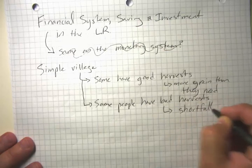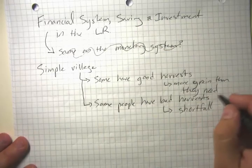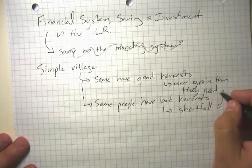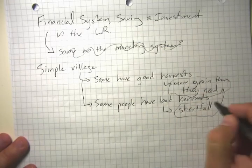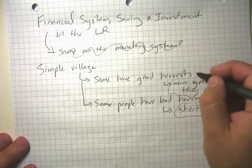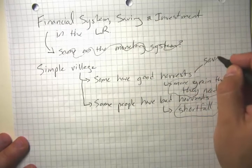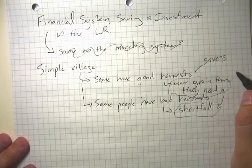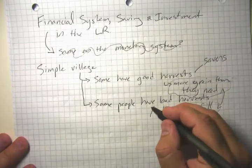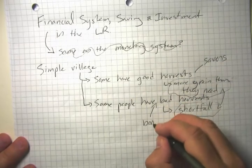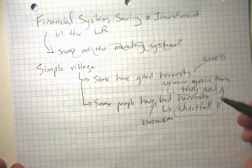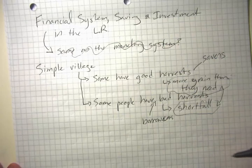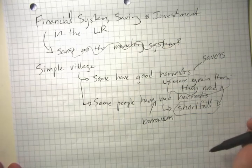And you can see that we need some way to coordinate the fact that some people have more than they need and some people want to borrow. So these people are savers because their income is above their current desire for using resources. And these people are borrowers. Now that just makes it sound like we're sort of trading off consumption over time. And some borrowing and lending does occur obviously for that purpose.